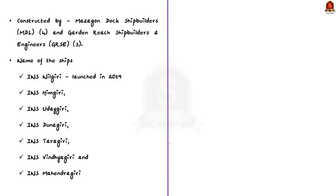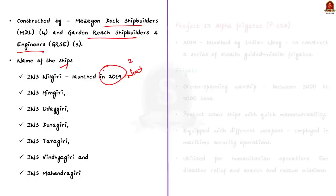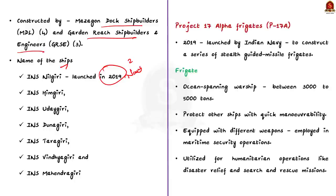This news article is about Project 17A. Project 17A, also called Project 17 Alpha frigates, was launched by the Indian Navy in 2019 to construct a series of stealth guided missile frigates. The P-17A has been constructed by two companies: Mazagaon Dock Shipbuilders and Garden Reach Shipbuilders and Engineers. The ships have been named INS Nilgiri, Himgiri, Udaygiri, Dunagiri, Taragiri, Vindhyagiri, and Mahendragiri — all names of hill ranges in India.